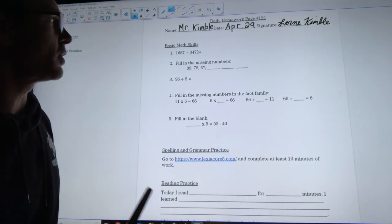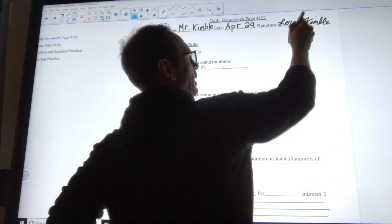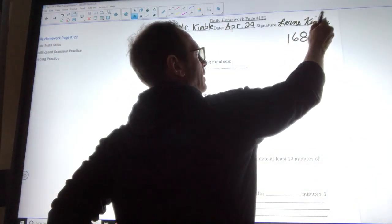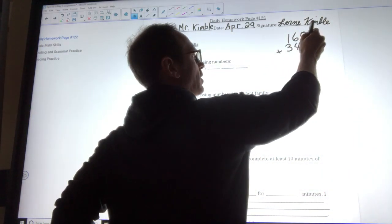Hi guys, I'm gonna go over daily homework page number 122 with you. So your first question is 1,687 plus 3,472. I'm going to use the stacking method. It looks like we might have a bit of carrying to do as part of this question. So if I'm stacking I write 1,687 and I add 3,472.